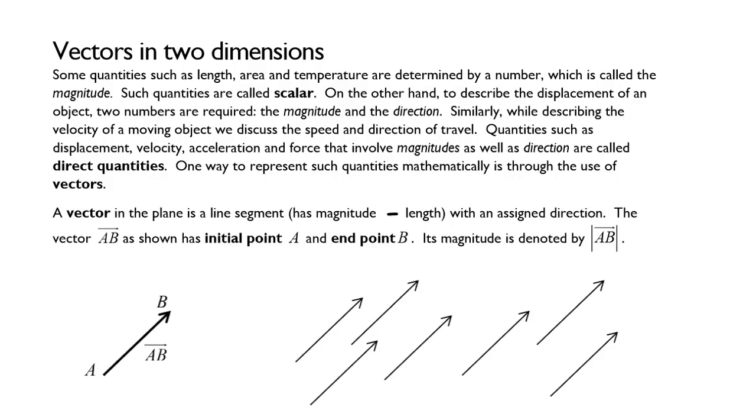A vector in the plane is a line segment that has a magnitude or length with an assigned direction. The vector AB, as shown, has initial point A and end point B. Its magnitude is denoted by the absolute value of the ray AB.